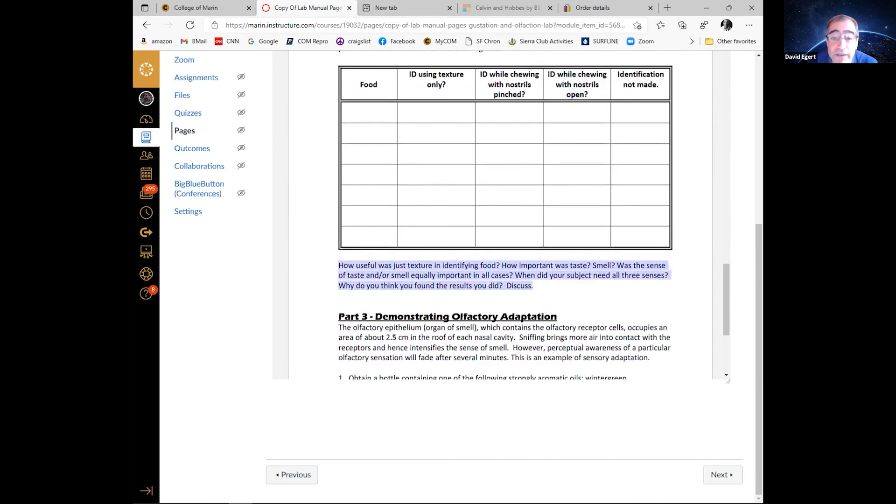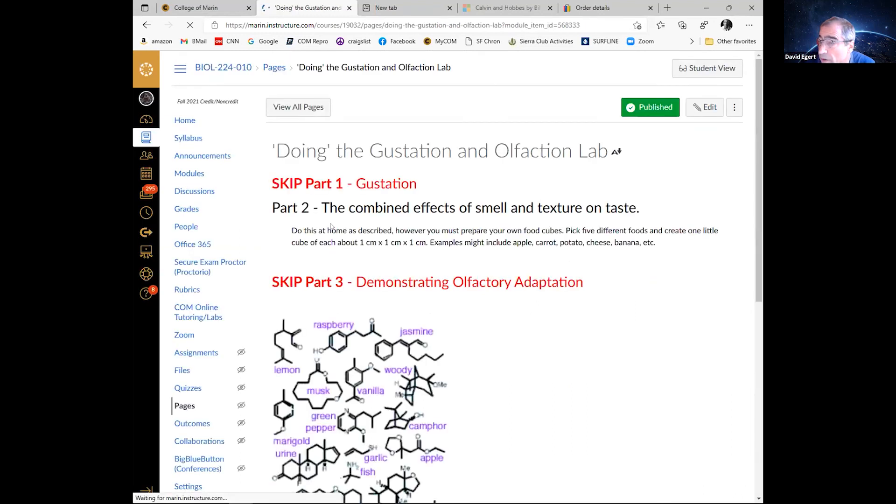And then just discuss what you find. How useful was just texture? How important was taste smell? Was it equally important in all cases? Why do you think you found the results you did? So just, you know, you're going to probably find some interesting fun stuff when you do this. So in terms of the actual, and don't worry about part three. So part one you're going to do, no part one you skip, part three you skip. The only part you're going to do is the thing I've just described.